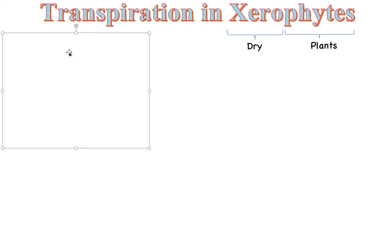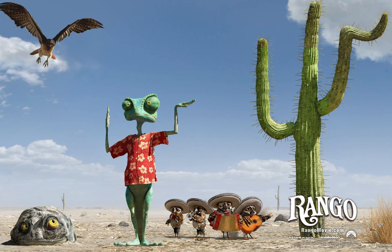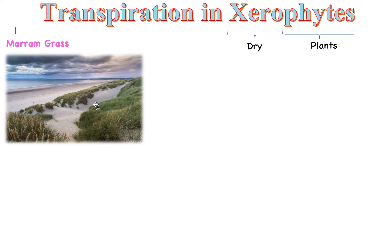One xerophyte you need to know for the IB is marram grass, which is basically beach grass. If you've ever been to the beach, you might know what I'm talking about. What you should know about this one is that it's a xerophyte with some interesting adaptations to survive in very dry conditions. Even though there's a whole ocean there, it's dry because it's sandy and doesn't rain much, and the ocean water is too far away for the plants to use.